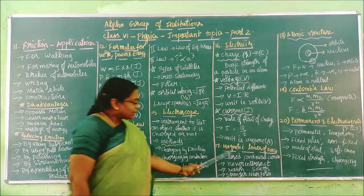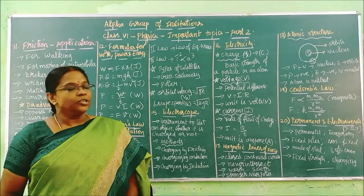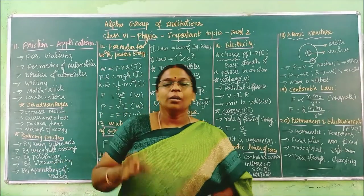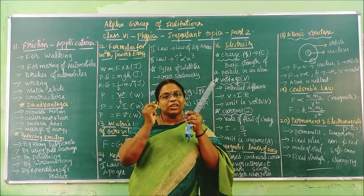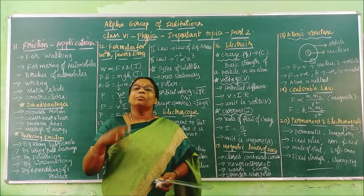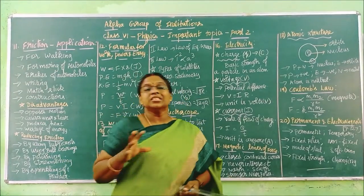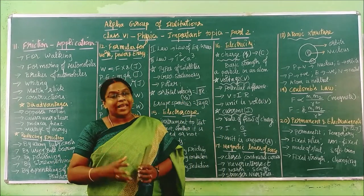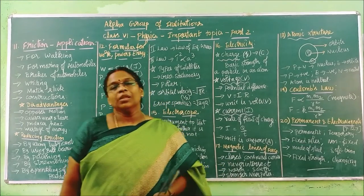Now we are moving to the last lesson, which is magnetism. This lesson was not taught in class or previous video, so I will go a little deeper. Around a magnet there is magnetic power. When you bring two magnets together they attach, because around the magnet there is a magnetic force, which contains magnetic lines of force.